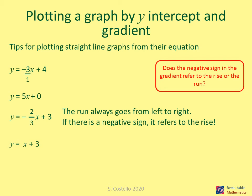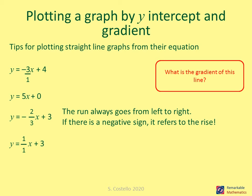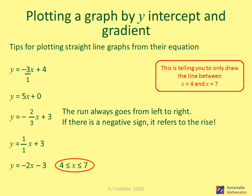For y equals x plus 3, if no gradient coefficient is written, the gradient is one, or one over one. Also note: if a question specifies drawing the line only between, say, x equals four and x equals seven, this simply restricts the portion of the line drawn and can help you determine the scale for your grid.